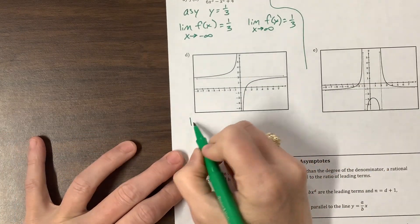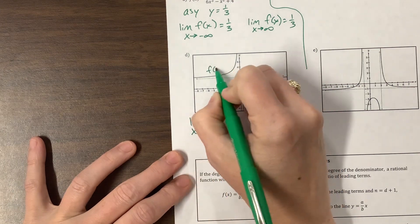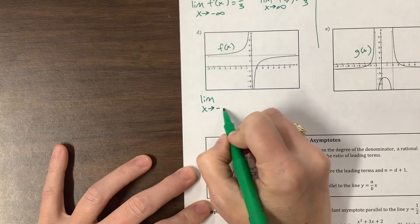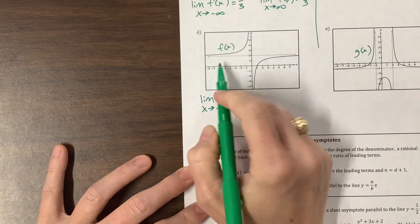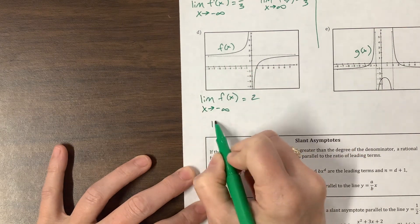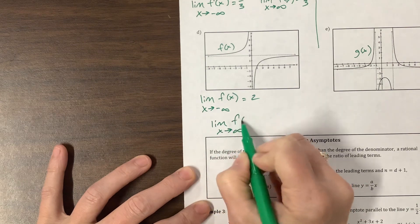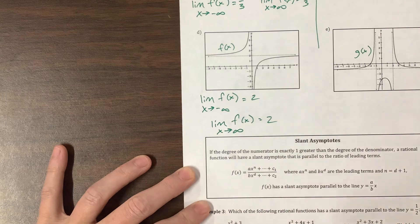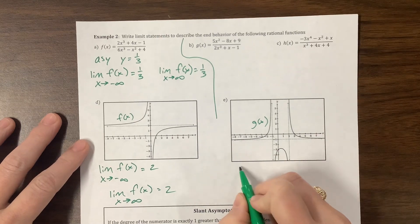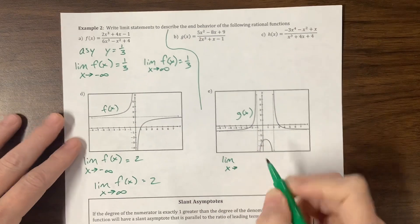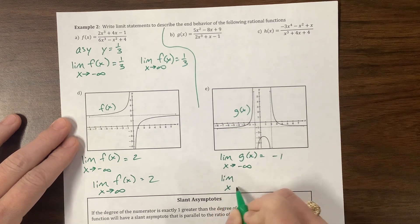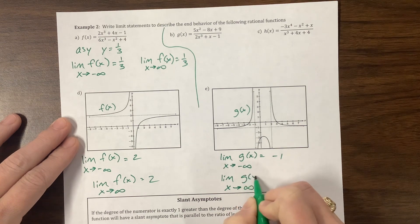Let's do this one too. We'll call this f of x and this one g of x. For f of x, the limit as x goes to negative infinity is 2, and the limit as x goes to positive infinity is also 2. For g of x, the limit as x goes to negative infinity equals negative 1, and the limit as x goes to positive infinity also equals negative 1.